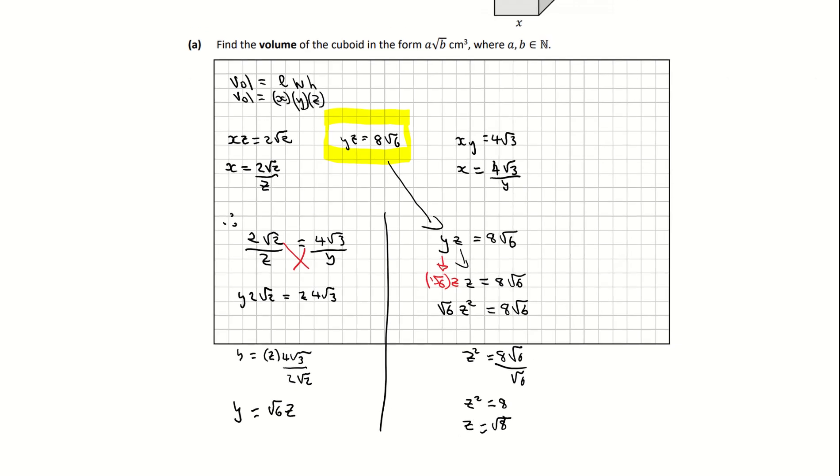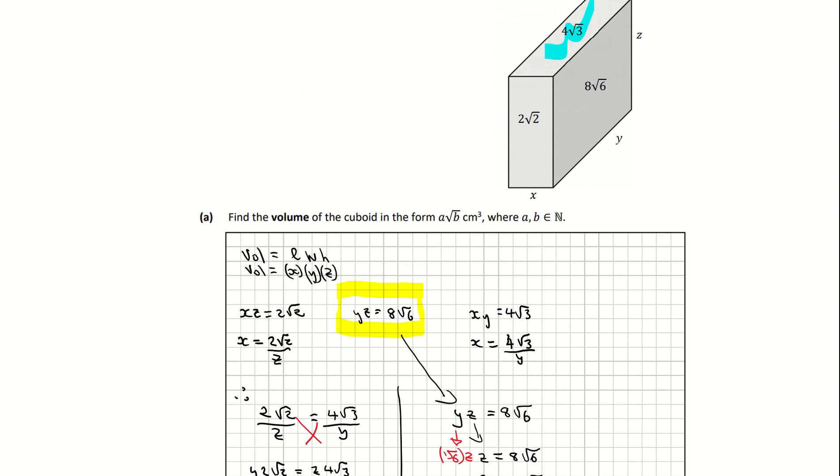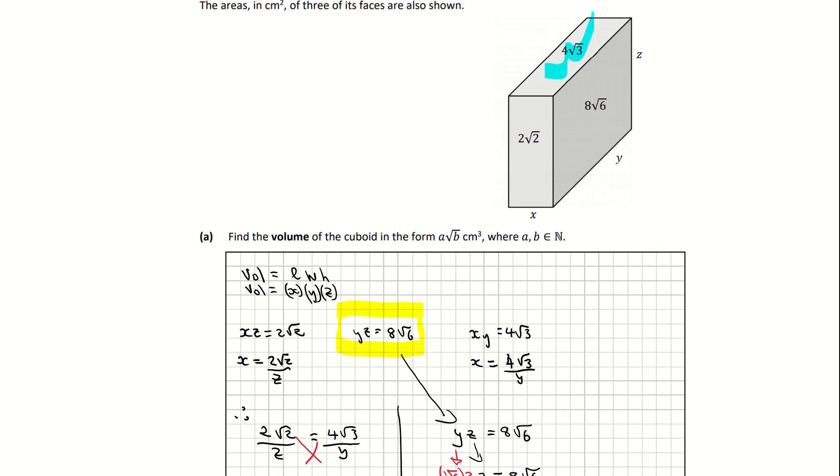I'm going to come back up to my picture now. I have found my z to be root 8, so I'm just going to mark that in. In order to get the volume of that box, it means that I'm now going to take the face of my top part of the box, the cross sectional area, and I'm going to multiply it by the depth of the shape, which is this z. That's going to use my knowledge of prisms.